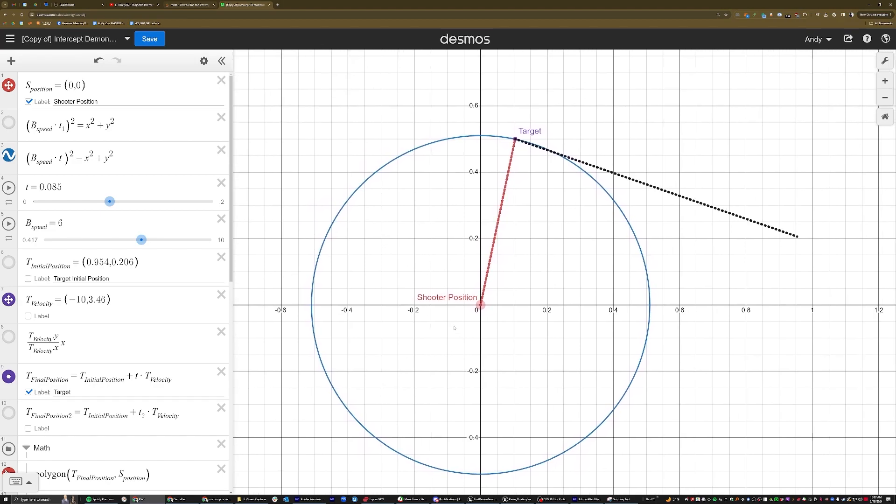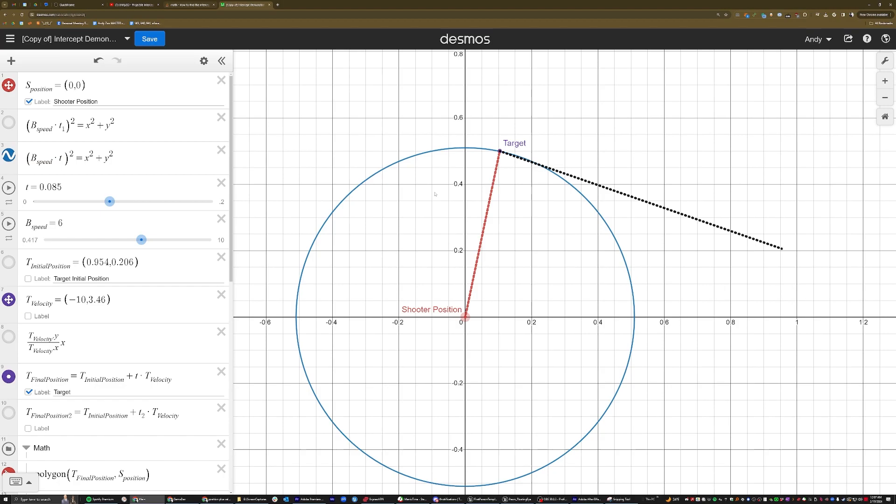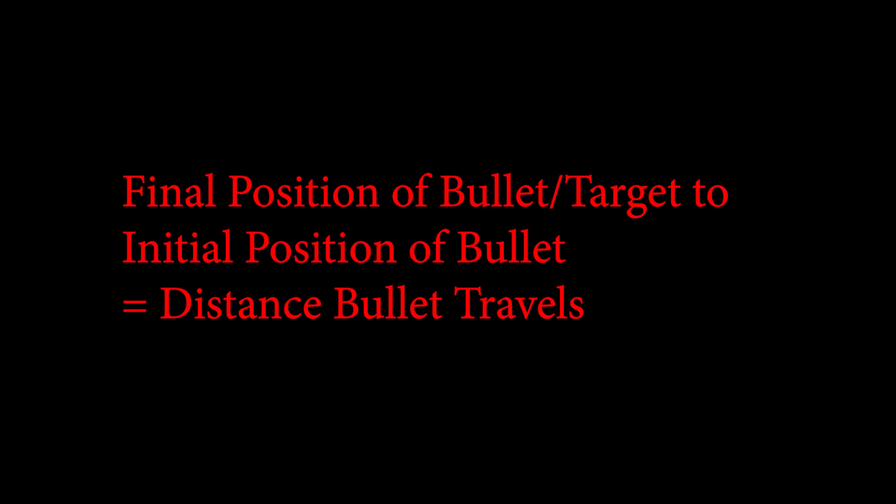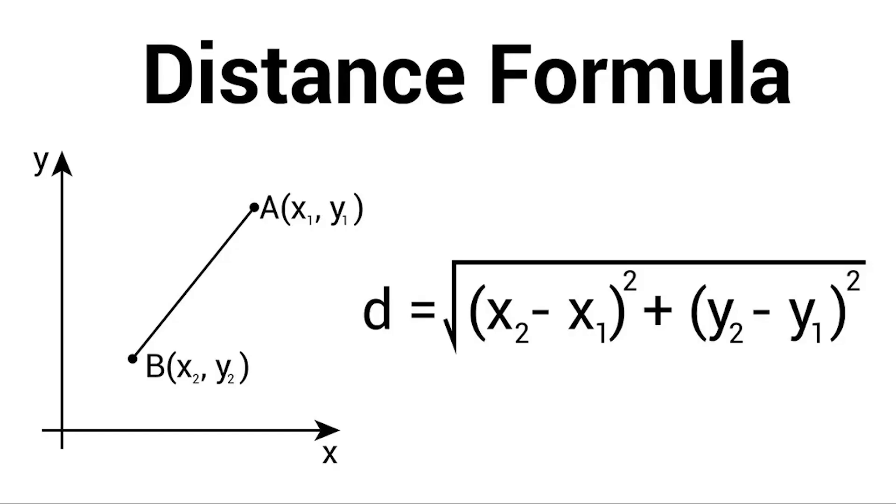Basically, we know that the distance between the target's final position and the bullet's initial position is equal to the distance that the bullet travels without needing to know the direction. And we can solve this using the Euclidean distance formula, which is an extension of the Pythagorean theorem.